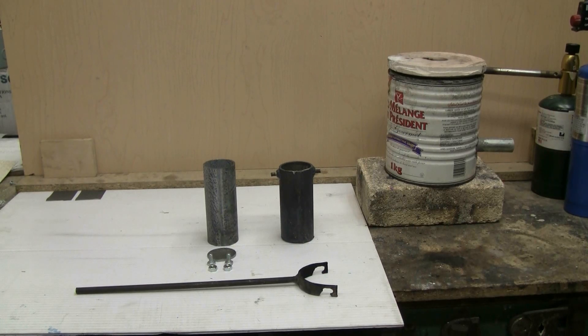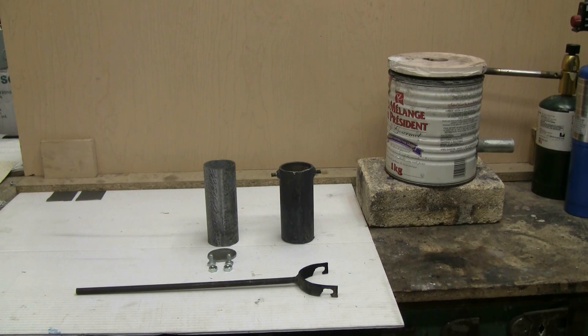This is the sixth video in my do-it-yourself mini foundry in a coffee can series. In order to melt any metal, we of course need a crucible to put into our furnace.